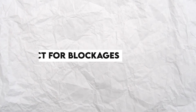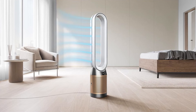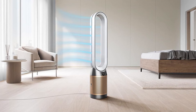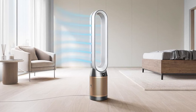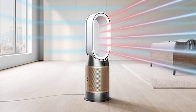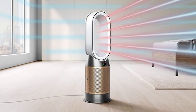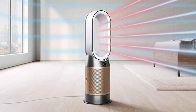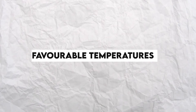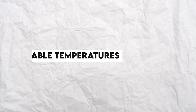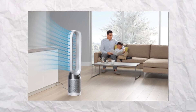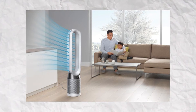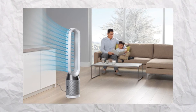Inspect for blockages — ensure your air purifier is in a place free from objects that could block it and cause it to malfunction. Ensure there's nothing blocking the inlet grill or the loop amplifier outlet. Favorable temperatures — ensure that the air purifier is in a room with a temperature of at least 5 degrees Celsius.